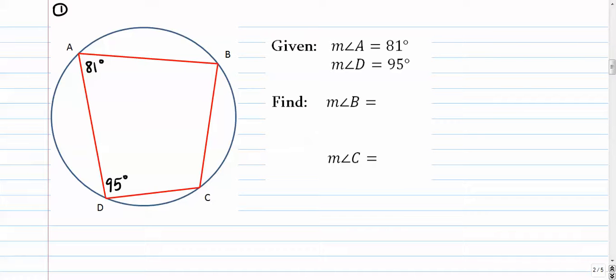All right, so let's start with angle B. We see that angle B is across from angle D. These are opposite angles. Be careful. They're not always congruent.